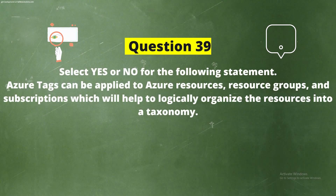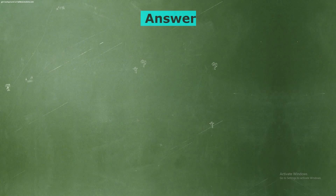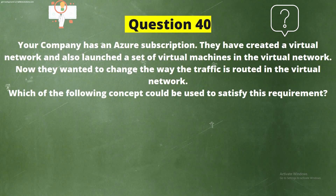Question 39: Select yes or no — Azure tags can be applied to Azure resources, resource groups, and subscriptions, which will help to logically organize the resources into a taxonomy. The correct answer is Option A, Yes. Explanation: Tags can be leveraged to organize and categorize billing. You apply tags to your Azure resources, resource groups, and subscriptions to logically organize them into a taxonomy. Each tag consists of a name and a value pair — for example, the name 'environment' and the value 'production' applied to all production resources.